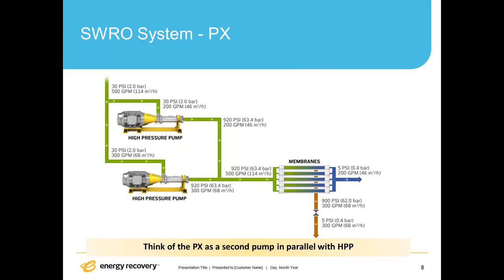You can think of the PX as a second pump in parallel, where the PX handles 300 gallons a minute of the total 500 gallons a minute and pressurizes it to the full 920 PSI. The two streams out of each pump then join together and go through the membrane system.